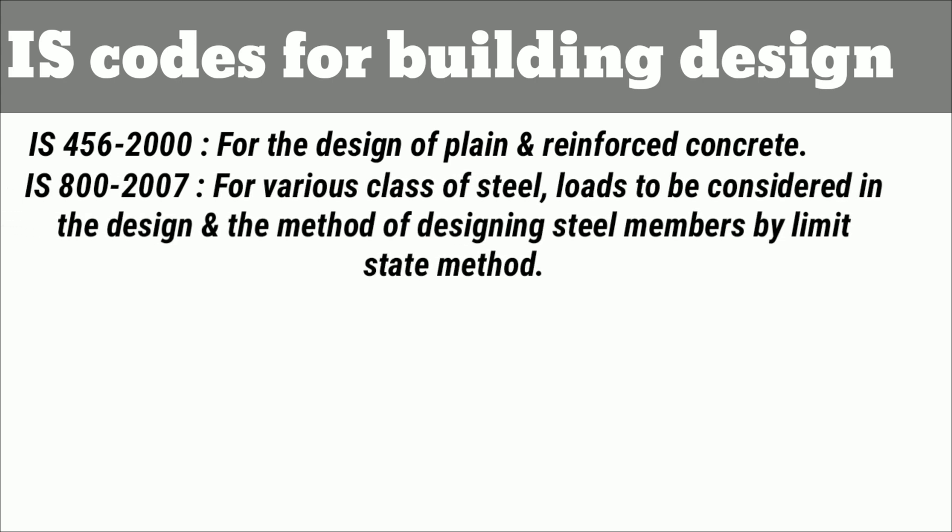IS 800-2007, titled General Construction in Steel Code of Practice, aims to achieve efficient and optimum standards for structural steel products. It gives guidelines for various classes of steel, loads to be considered in the design, and the method of designing steel members by the limit state method.